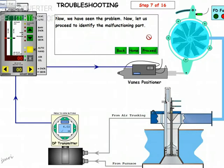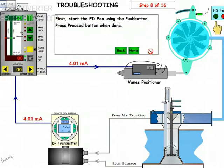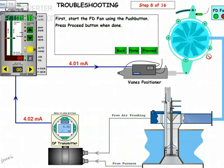To solve the problem, we will start the FD fan and take control to manual. First, start the FD fan — just push this button here — so the fan starts. Then push the next button. All these have been digitalized for easy operation.